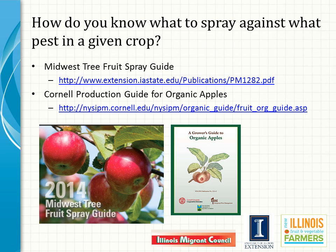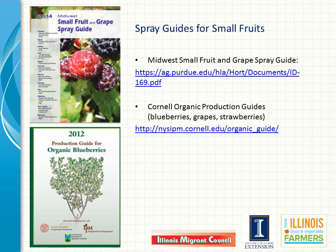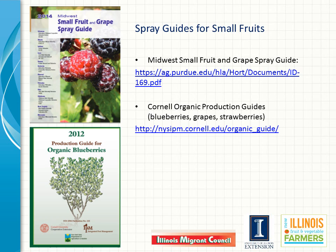So how do you identify what pesticides can be used in what crops to control or prevent specific pest problems? For tree fruits, the Annually Updated Midwest Tree Fruit Spray Guide and the Cornell Guide for Organic Apple Production list spray recommendations for insect, plant disease, weed, and vertebrate pest control. For grapes and small fruits such as brambles, blueberries, and strawberries, the Annually Revised Midwest Small Fruit and Grape Spray Guide and the Cornell Organic Production Guides for certain small fruits provide spray recommendations for specific pest problems. For vegetable crops, the Midwest Vegetable Production Guide and Cornell's Organic Vegetable Production Guides for specific crops provide pesticide recommendations and other production and pest management guidelines.